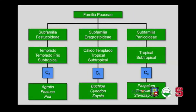La familia Poaceae se dividió en la subfamilia Festucoidae de climas más fríos, con especies como Agrostis, Festuca y Poa, que son de fotosíntesis de carbono 3; mientras que la subfamilia Eragrostroidae, compuesta por géneros como Cynodon, Zoysia y Buchloe, y la subfamilia Panicoidae, de los géneros Paspalum, Pennisetum y Stenotaphrum, tuvieron una fotosíntesis de cuatro carbonos, mucho más eficiente.